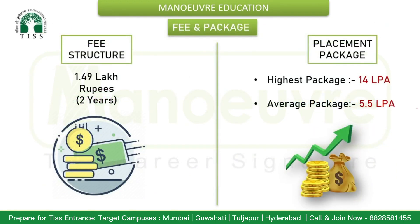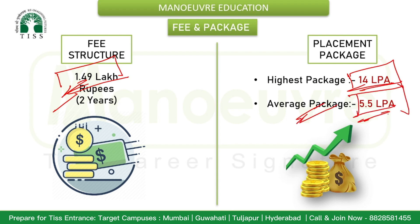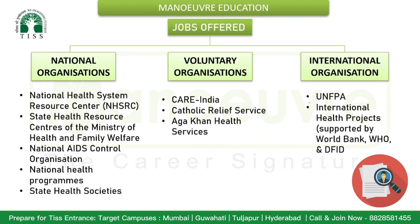Let's discuss fee structure and packages. The total fee for the two-year MPH program is 1.49 lakh rupees. The highest package is 14 lakh rupees and the average package is 5.5 lakh rupees. The ROI is definitely good and amazing, and you should definitely target this program at TISS Mumbai campus.